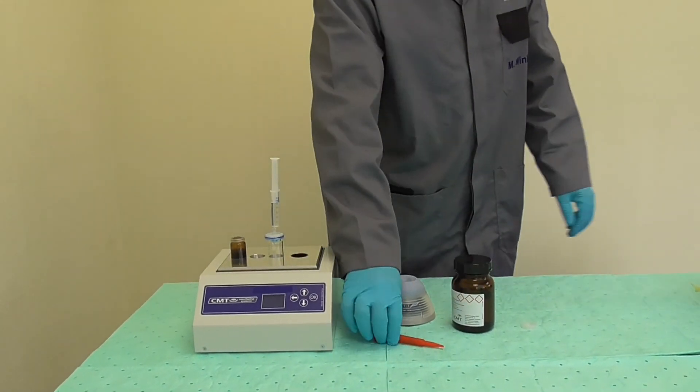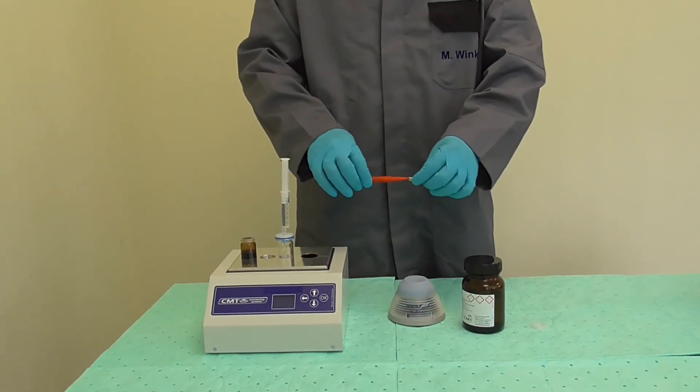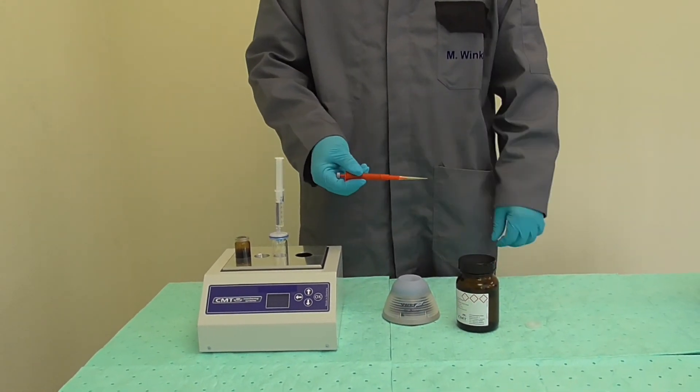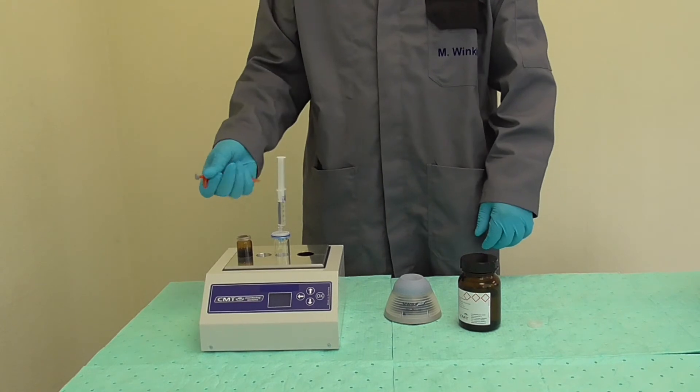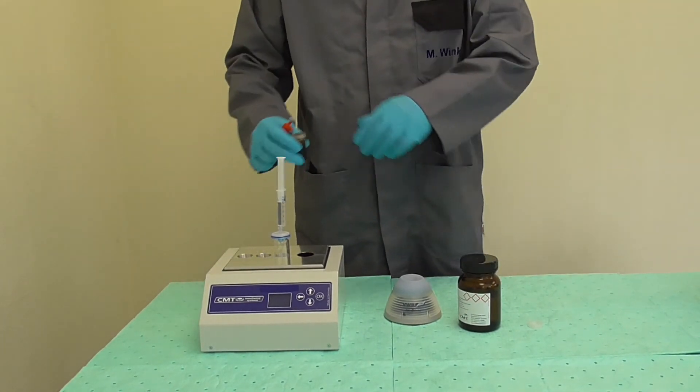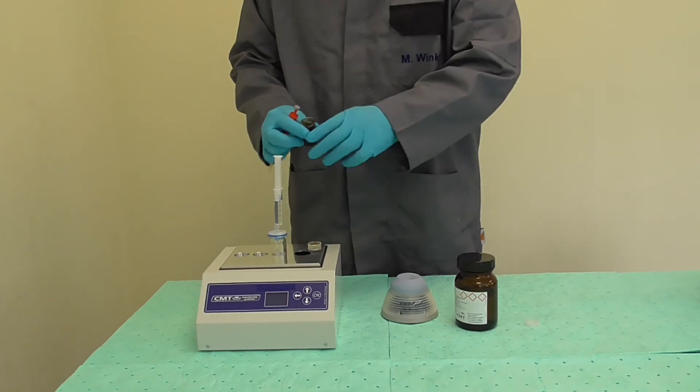Take the supplied micro pipette and put a disposable tip on top of it. Open the vial and take a full load with the micro pipette from that vial.